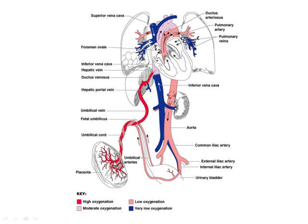The placenta connects via the umbilical vein and two umbilical arteries. Blood travels through the umbilicus via the ductus venosus to the right atrium, then through the foramen ovale to the left atrium to reach the aorta. A small amount of blood enters the right ventricle and pulmonary trunk — some travels to the lungs to support vessel development, but most is shunted through the ductus arteriosus to the aorta. The aorta then carries blood through the fetal blood vessels, and the umbilical arteries return blood to the placenta via the iliac arteries.